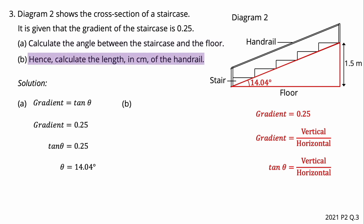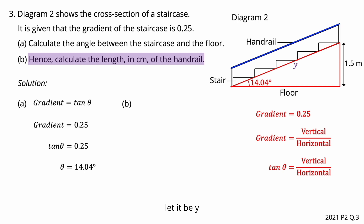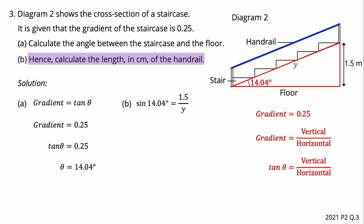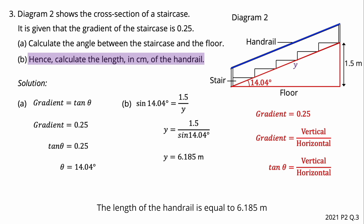Next, calculate the length of the slant, which is the hypotenuse of the right-angle triangle. Let it be y. Using the sine formula — opposite over hypotenuse — sine 14.04 equals 1.5 divided by y. Transposing, y equals 1.5 divided by sine 14.04. Therefore y equals 6.185 m. The length of the slant is 6.185 m.